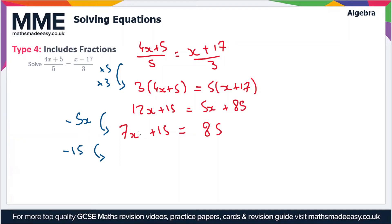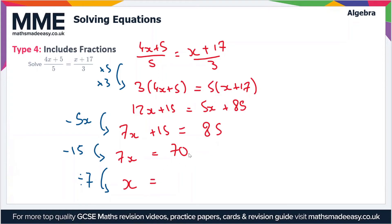Removing 15 from both sides gives us 7x on its own, equal to 70. The last step is to divide both sides by 7, so x equals 70 divided by 7, which is 10. Our final answer is x = 10.